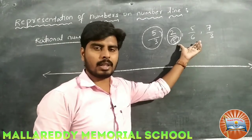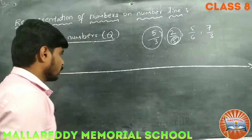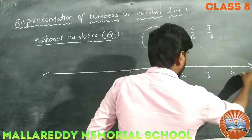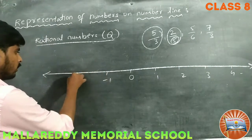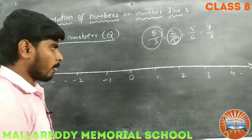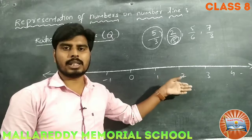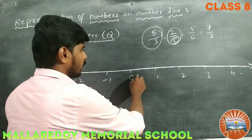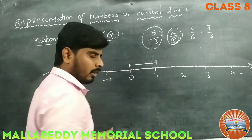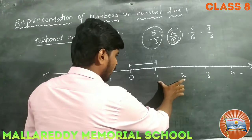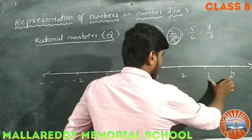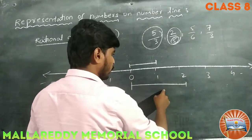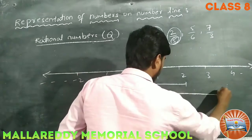Now we have to represent these numbers on the number line. Here 0, 1, 2, 3, 4, and so on; minus 1, minus 2, and so on. This is actually the integer number line, but integers are also rational numbers. The part between 0 and 1 is called 1 unit. Between 1 and 2 is also 1 unit, and 2 to 3 is also 1 unit. So 1 plus 1 is 2 units, and 1 plus 1 plus 1 is 3 units.